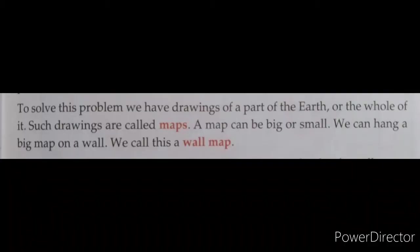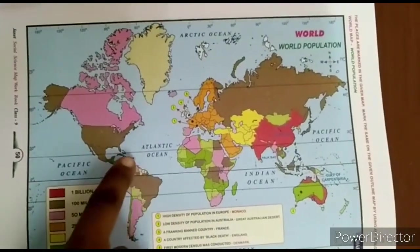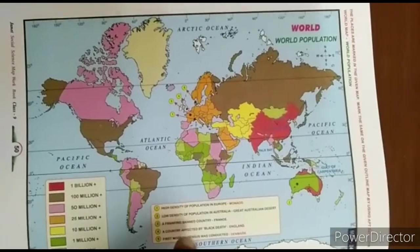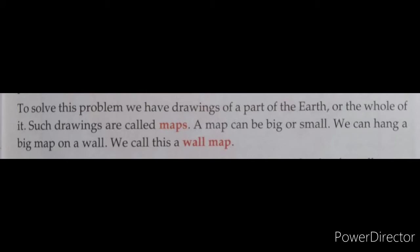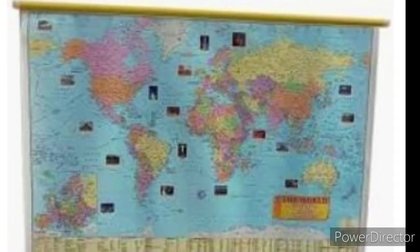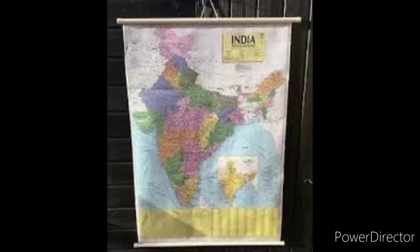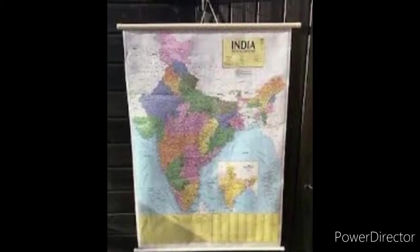To solve this problem, we have drawings of a part of the earth called maps. A map has drawings, colors, and explanations of the whole area. Such drawings are called maps. A map can be big or small. We can hang a big map on a wall — we call this a wall map. This map has drawings, colors, and information that we can hang on the wall.